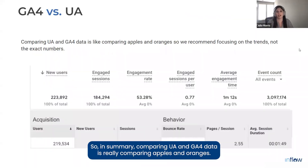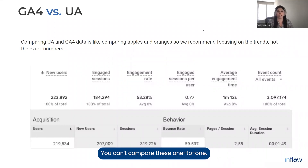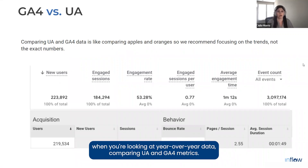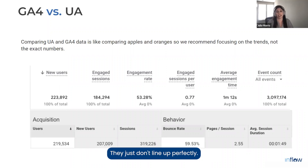In summary, comparing UA and GA4 data is really comparing apples and oranges — you can't compare these one-to-one. We really recommend focusing on the trends and not on the exact numbers. When looking at year-over-year data and comparing UA and GA4 metrics, they just don't line up perfectly, and differences are going to be there.